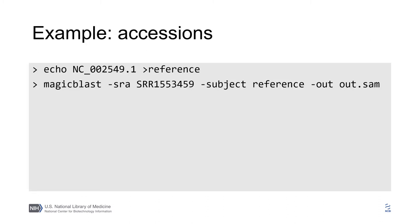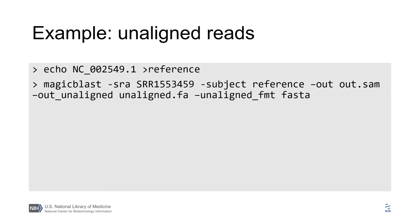This is an example of aligning Ebola virus reads against the Ebola virus genome. If you know the NCBI accessions of the SRA run and the genome sequence, you can just provide the accessions. And if you are interested in unaligned reads, this is how they can be saved separately.